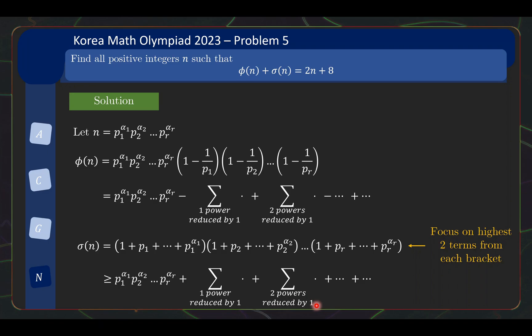Similarly, you can look at the terms you get by picking two of the brackets as the second largest term but the rest of the brackets you take the largest term. So you get plus sum of terms where two of the powers are reduced by 1. Plus dot dot plus dot dot and so on. Then of course this is greater than or equal to, the left side is greater than equal to this right side because in this expression here I'm just only focusing on the highest two terms from each bracket.